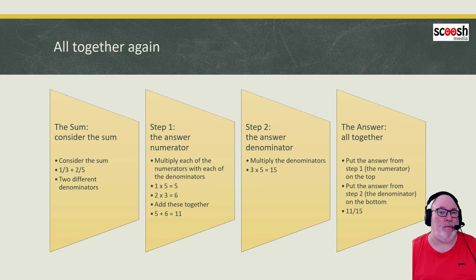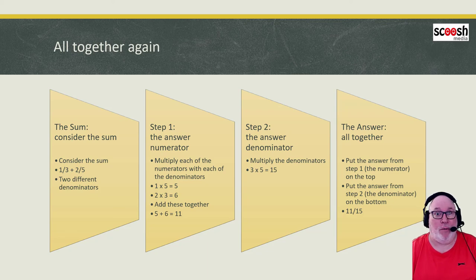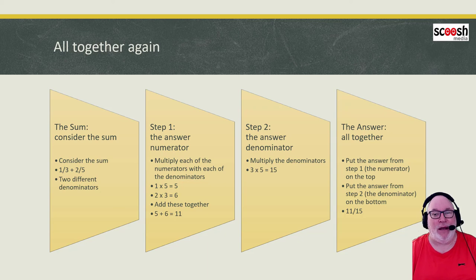Let's put it all together for a wee summary. We think about and consider the sum. Step one, we multiply each of the numerators by the denominators opposite. Step two, we multiply the two denominators together. That forms your answer - step one gives you the numerator, step two gives you the denominator. You can always rewind, fast forward, pause - have great fun with these videos. Might not be able to do that with me in the classroom! I'm glad you've joined me for this video tutorial. I hope you found it useful - look out for some more. Thanks very much, bye for now.